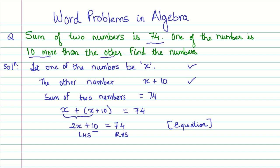Let's start by transposing 10. Let me change the color so it's clearer. We keep 2x on the left hand side, but we transpose the 10 to the right hand side. So we have 74. When we transpose, the plus sign becomes a negative. So here it becomes 74 minus 10. If we simplify this further, we have 2x equals 64.